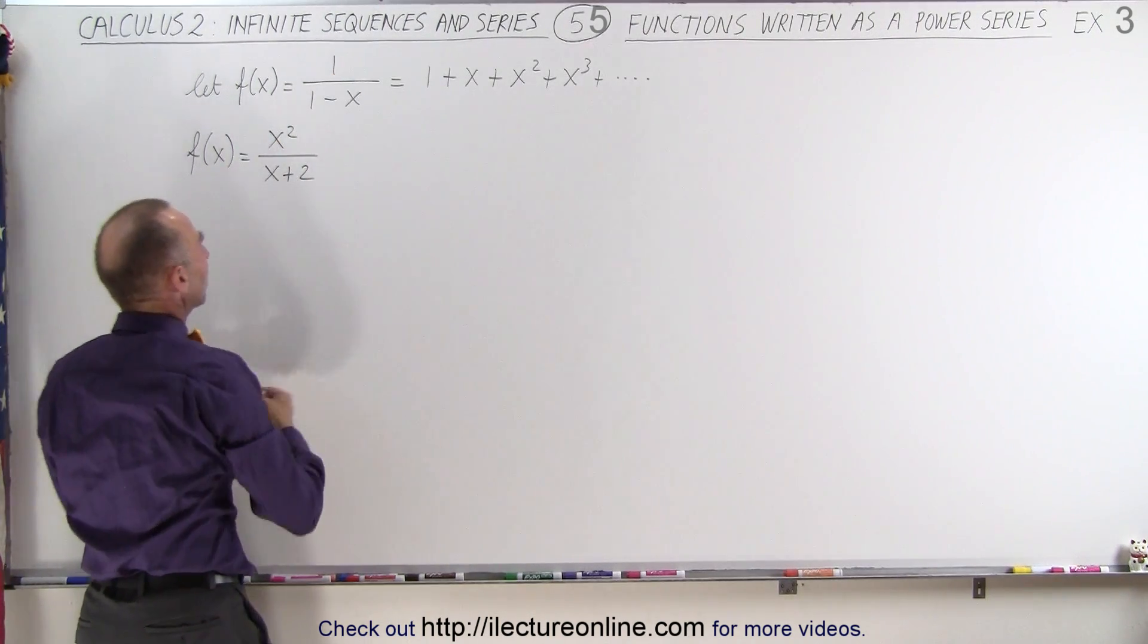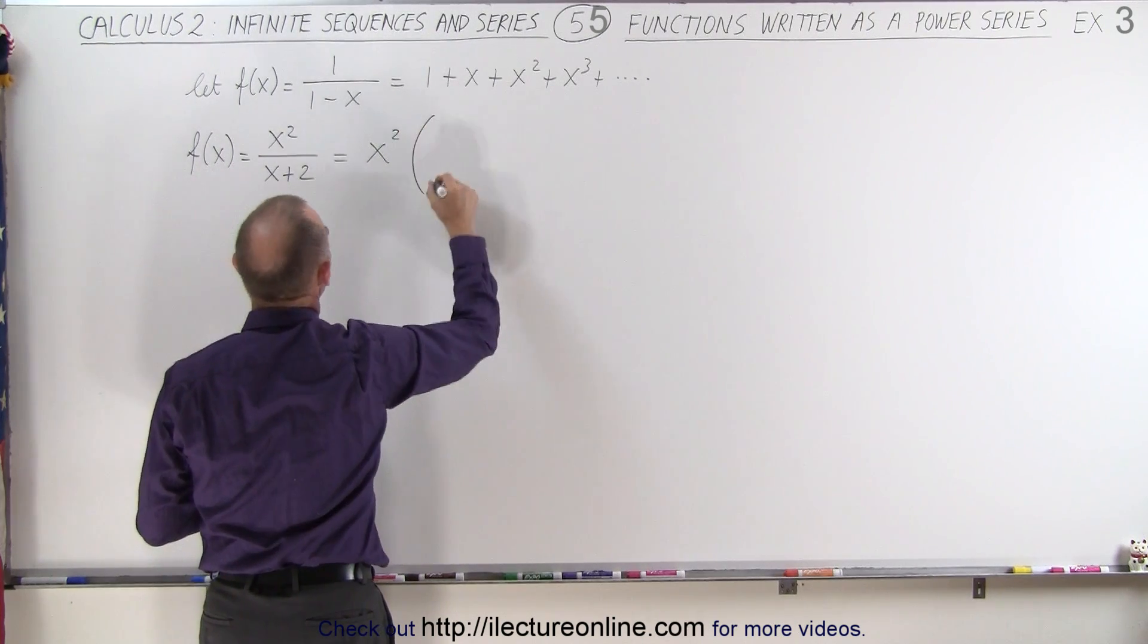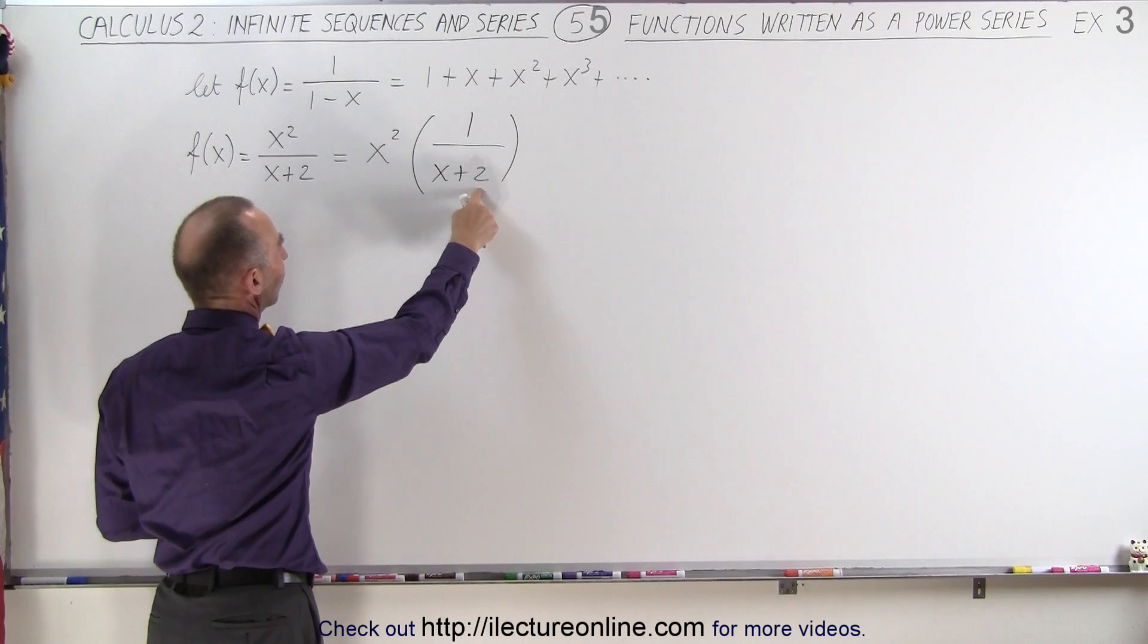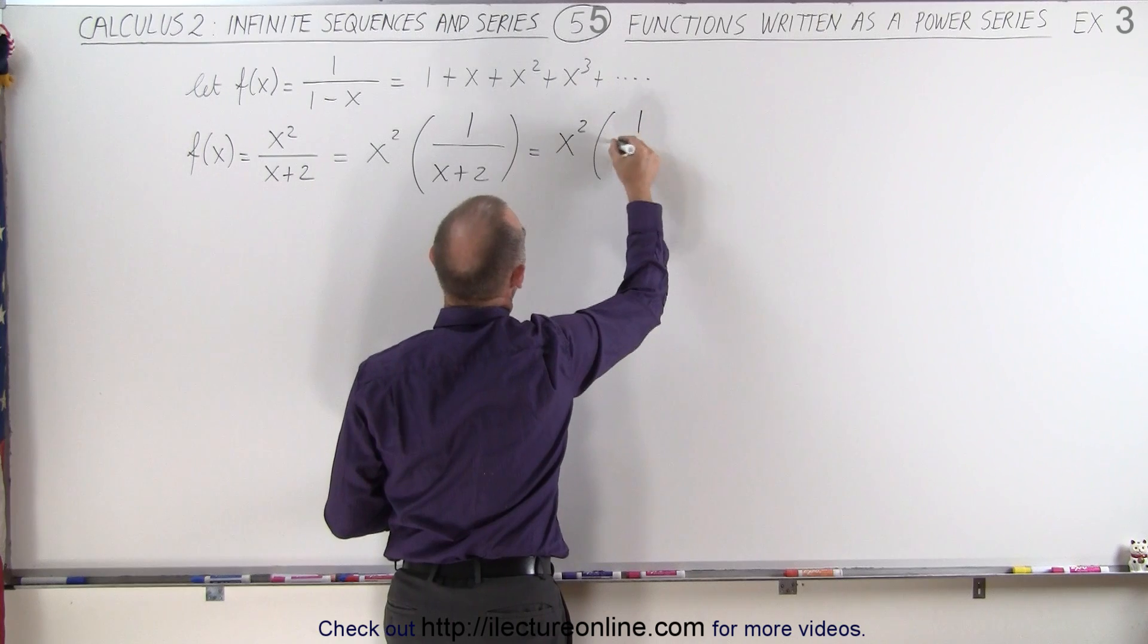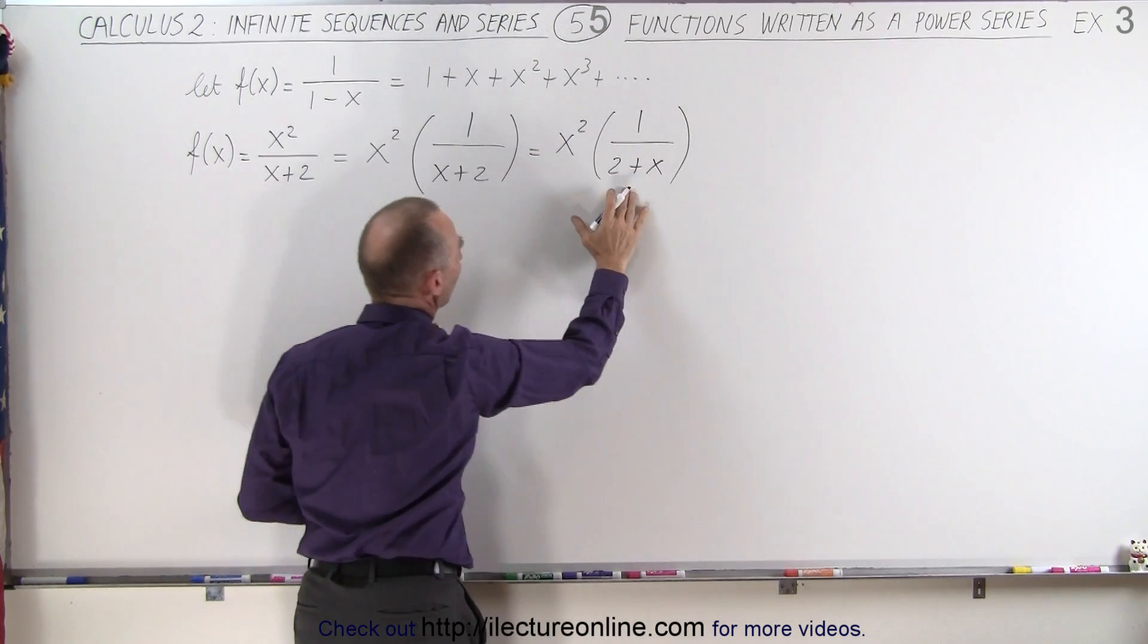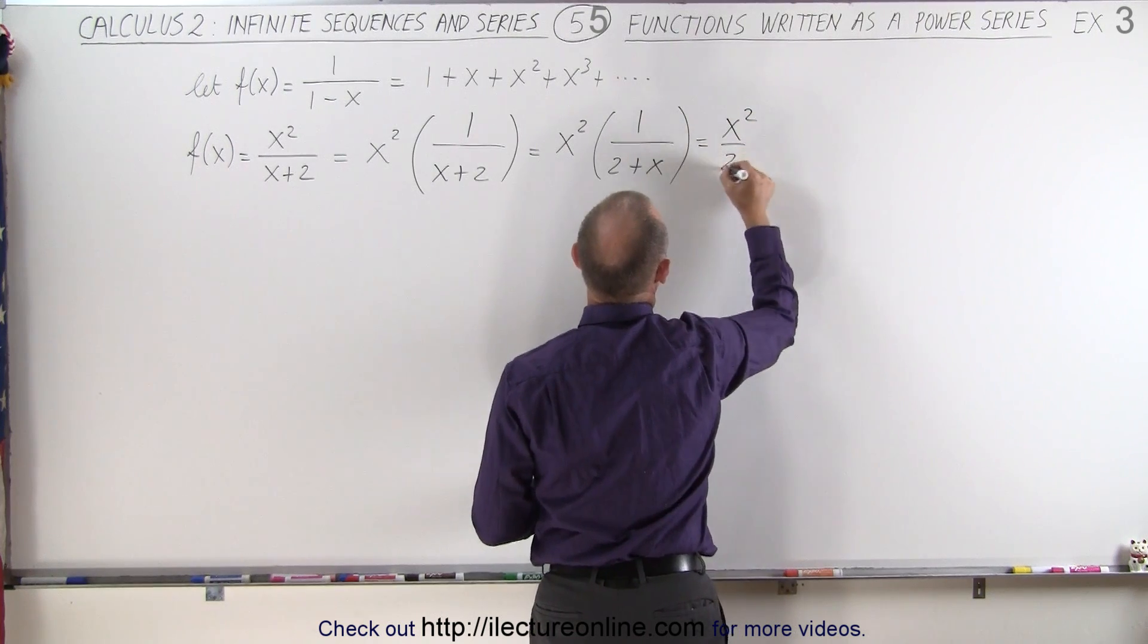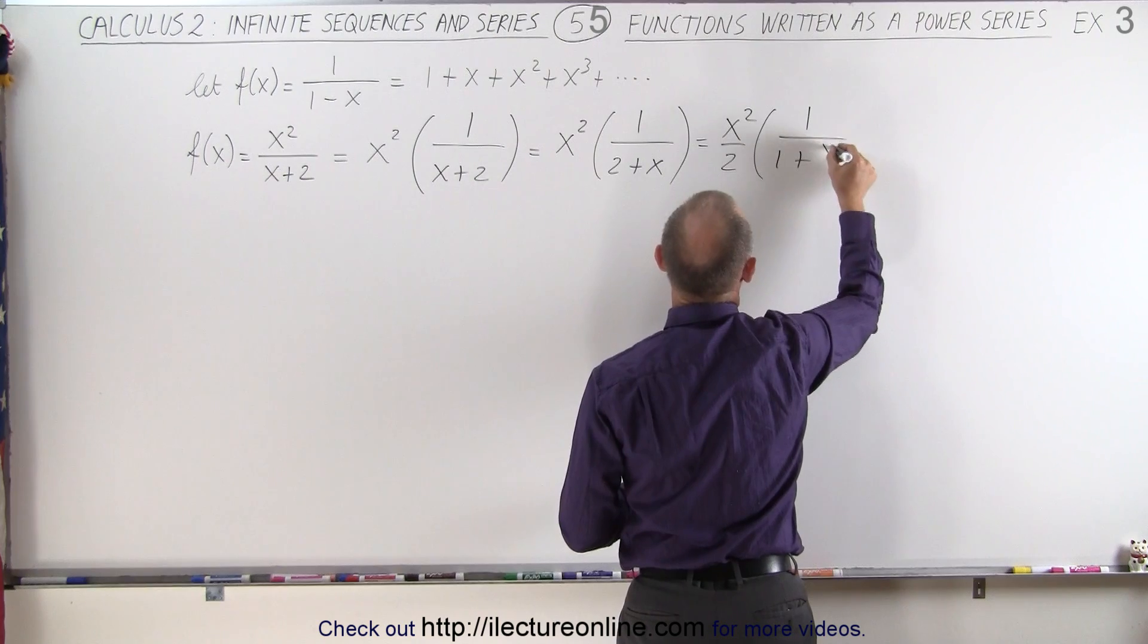Well again we're trying to make it look like this. So we're going to factor out an x squared. This can be written as x squared times 1 over x plus 2. Then we're going to switch the denominator around so we have the x in the back and the 2 in the front. So this equals x squared times 1 over 2 plus x. We don't want a 2 there, we want a 1, so we can factor out a 1 half. This equals x squared divided by 2 times 1 over 1 plus x over 2.